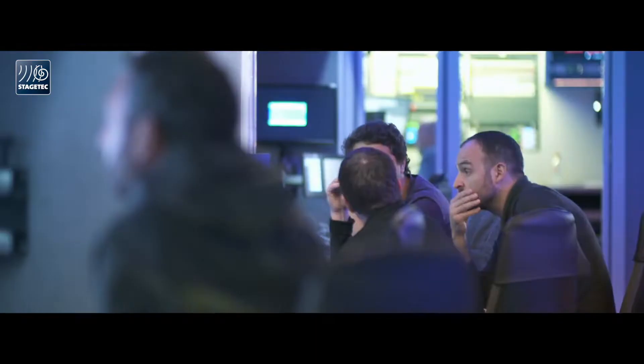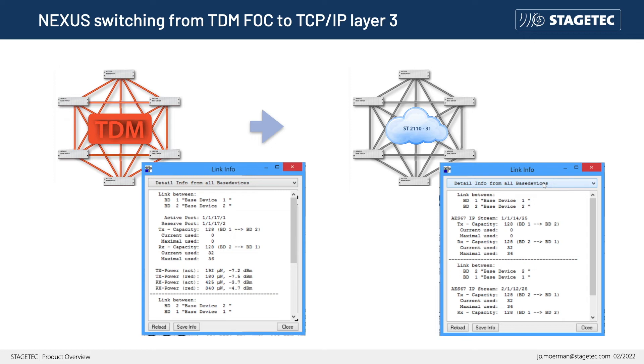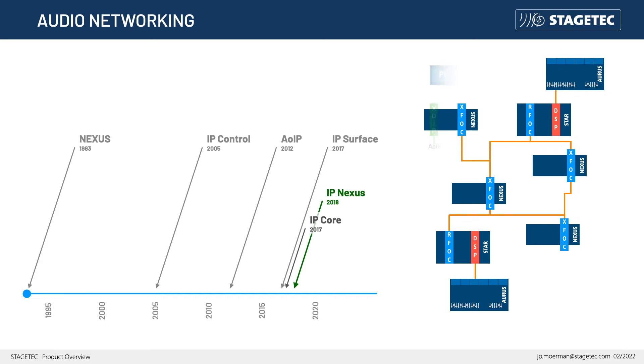In combination with our AvaTus networked console, your transition to IP is now complete. A switch is no big deal — it's just changing the Nexus nodes' interconnecting format. Nexus has evolved with new technologies and standards. Since 2005, IP has been gradually put into use, resulting today in a Stagetech all-IP solution.